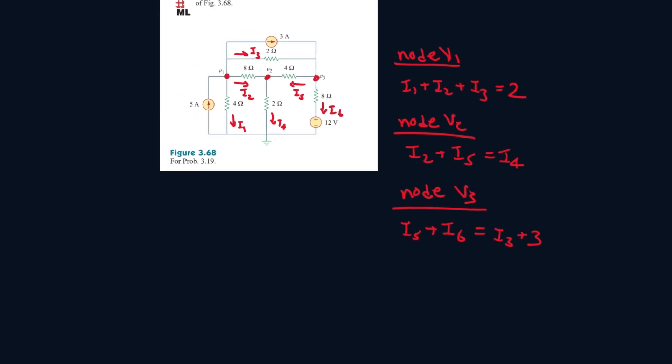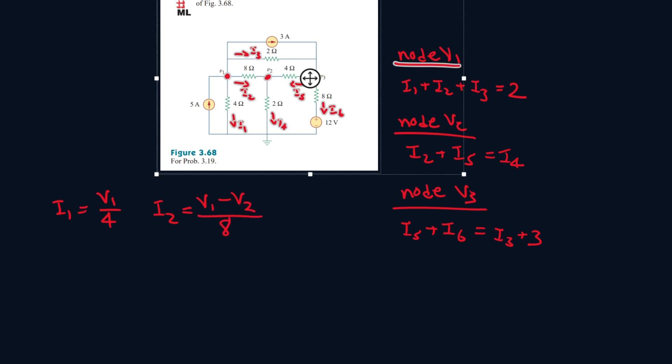Now, let's find what these I values will be equal to. I1 goes from V1 to 0, all over 4. I2 goes from V1 to V2, so V1 minus V2 all over 8. I3 goes from V1 to V3, so V1 minus V3 all over 2, because these two are technical nodes so the voltage will be the same throughout.